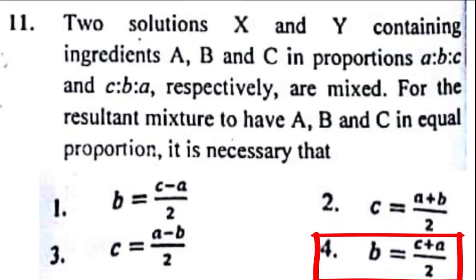Problem number 11: Two solutions X and Y containing ingredients A, B and C in proportions A ratio B ratio C and C ratio B ratio A respectively, are mixed for the resultant mixture to have A, B and C in equal proportion. It is necessary that the correct answer to this problem is option 4, B equals C plus A by 2.